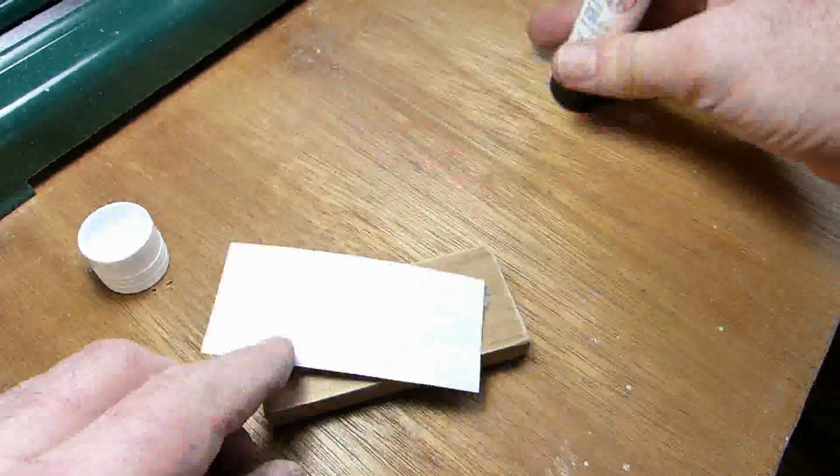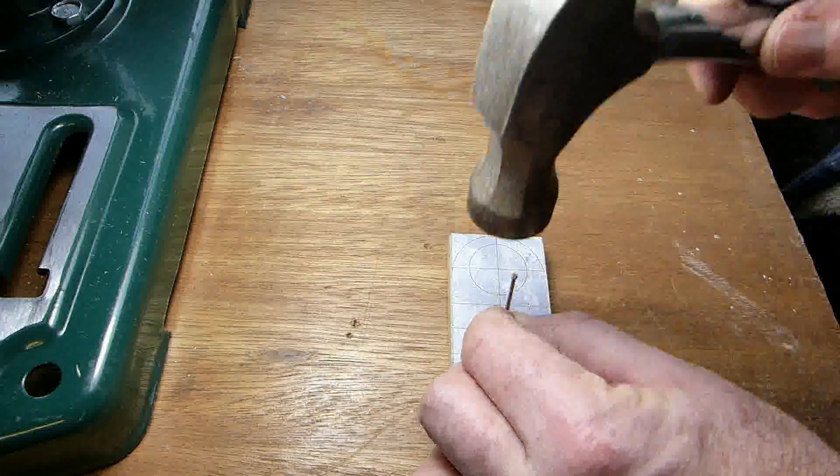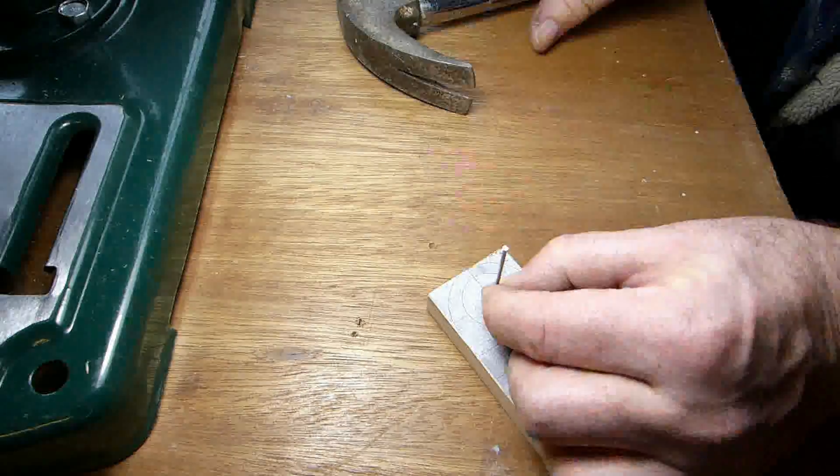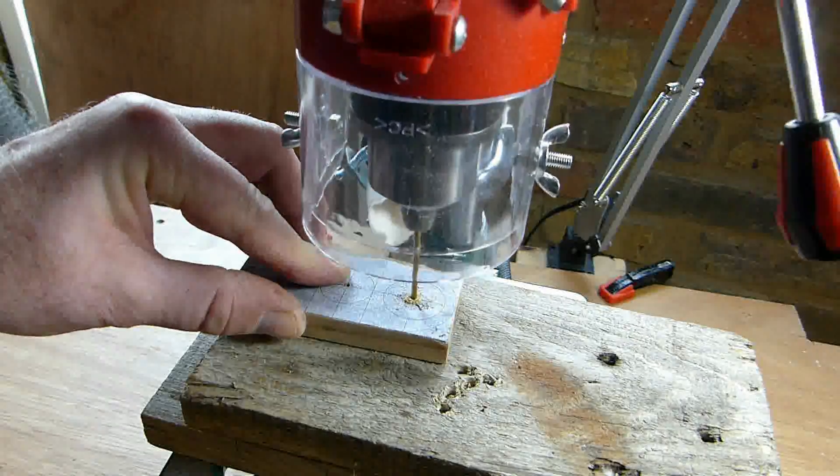Next I glued the paper template onto the wood using a glue stick, marked the centre of the three holes and drilled pilot holes.